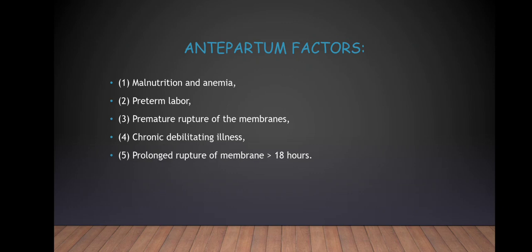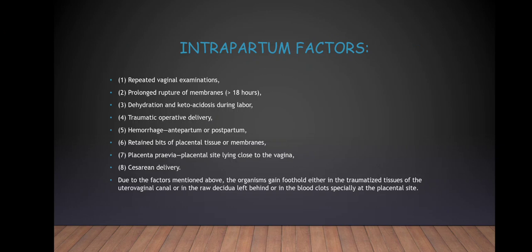Antepartum and intrapartum predisposing factors include: malnutrition and anemia, preterm labour, premature rupture of membranes, chronic debilitating illness, prolonged rupture of membranes of more than 18 hours, dehydration and ketoacidosis during labour, traumatic operative delivery, hemorrhage (antepartum or postpartum), retained bits of placental tissue or membranes, and placenta previa — whereby the placental site lies close to the vagina — or caesarean delivery. Due to these factors, organisms gain a foothold in the traumatized tissues of the uterovaginal canal, the raw decidua left behind, or in the blood clots, especially at the placental site.